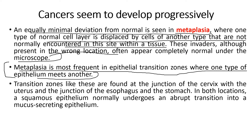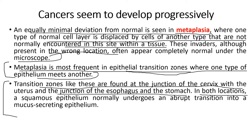Transition zones like these are found at the junction of the cervix with the uterus, and the junction of the esophagus and the stomach. In both locations, a squamous epithelium normally undergoes an abrupt transition into a mucus-secreting epithelium. These epithelial layers get exchanged or replaced at these junctions, and that is where metaplasia is observed.